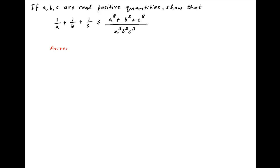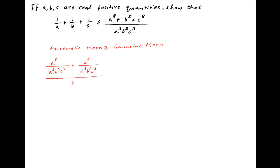We know that the arithmetic mean of two positive numbers is always greater than or equal to their geometric mean. Consider two numbers: a raised to the power 8 upon a³b³c³, and b raised to the power 8 upon a³b³c³. The sum of these two numbers divided by 2, which is the arithmetic mean, is greater than or equal to the square root of their product, which is the geometric mean.